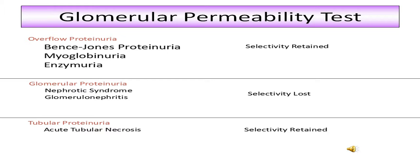Overflow proteinuria means increased circulating concentration of low molecular weight proteins. When small molecular weight proteins are increased in blood, they overflow into urine. For example, hemoglobin has a molecular weight of 67,000 and can pass through normal glomeruli; therefore, hemoglobin in free form can appear in urine — this is hemoglobinuria. Similarly, myoglobinuria is seen following muscle crush injury.